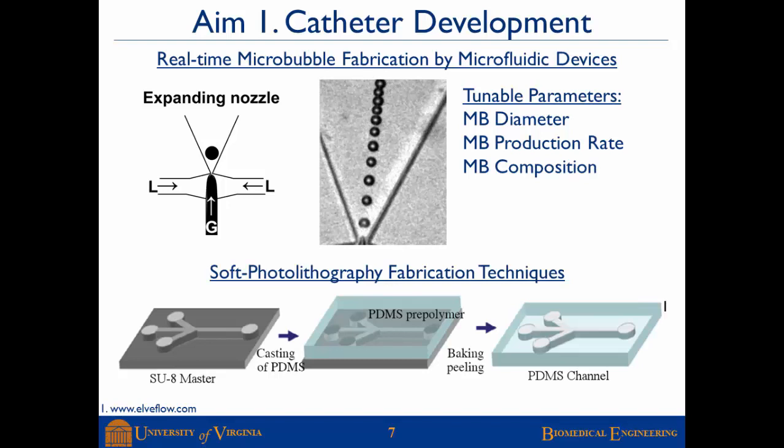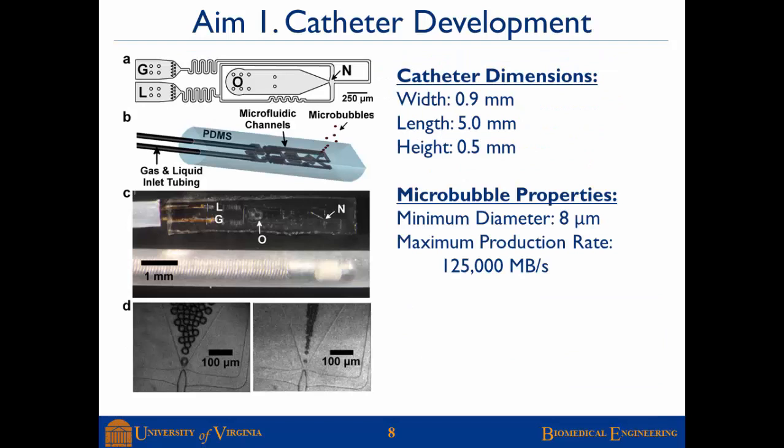We use standard soft photolithography fabrication techniques to fabricate this catheter. The microfluidic channel network has a gas inlet, a liquid inlet, and the two phases meet at a nozzle where microbubbles are produced, with an outlet to release them. Figure C shows a camera photo of the catheter placed next to a Volcano IVUS, demonstrating that it can be made to human-sized dimensions.